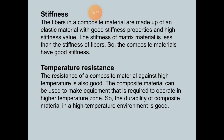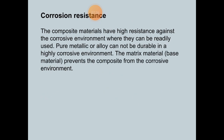Next is stiffness, which is also a very important property of composite materials. The fibers in composite materials are made of elastic materials with good stiffness properties and high stiffness values. The stiffness of matrix materials is less than the stiffness of the fibers, so the composite materials overall have good stiffness. Next is temperature resistance. The resistance of composite materials against high temperatures is also good, and they can be used to make equipment required to operate in high-temperature zones.